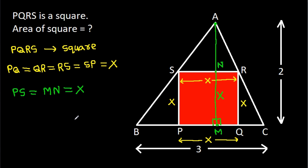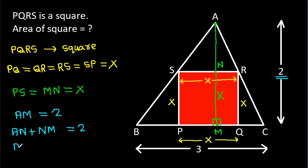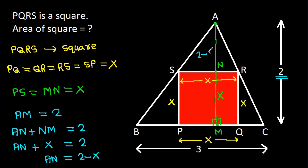Now, we have height AM equal to 2. And AM is AN plus NM, where NM is X, so AN plus X equals 2. Therefore AN will be 2 minus X.